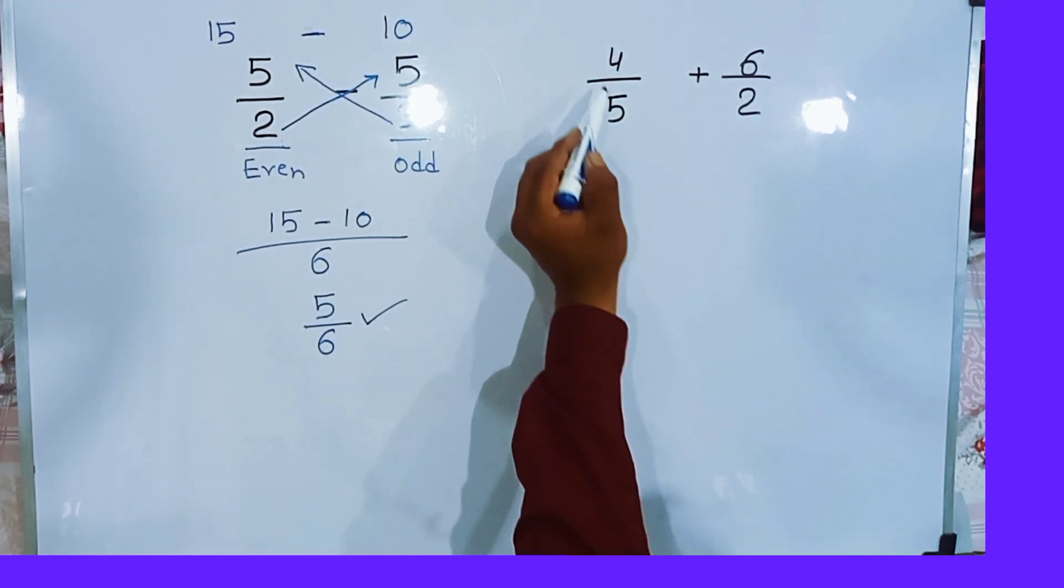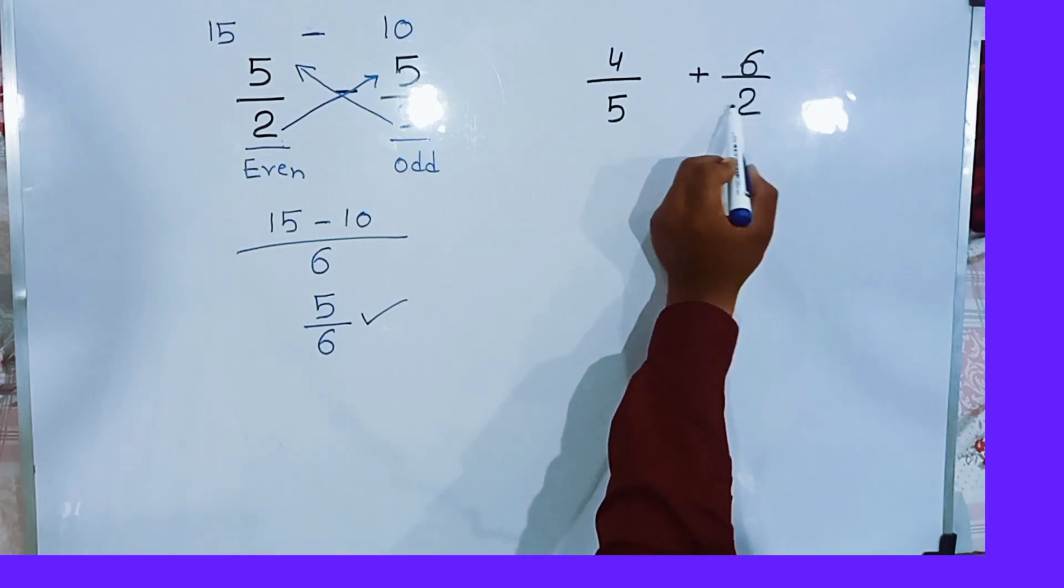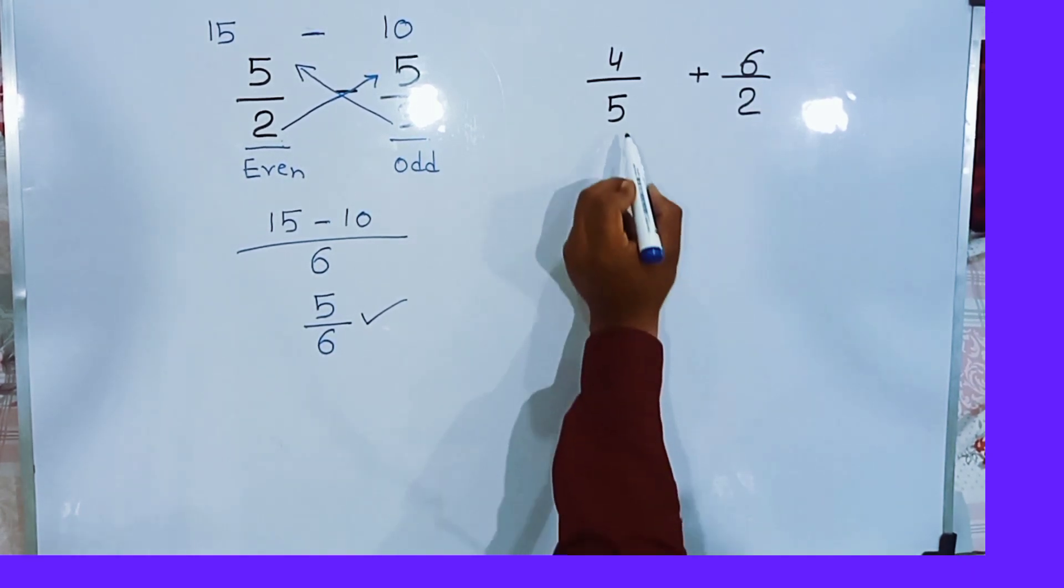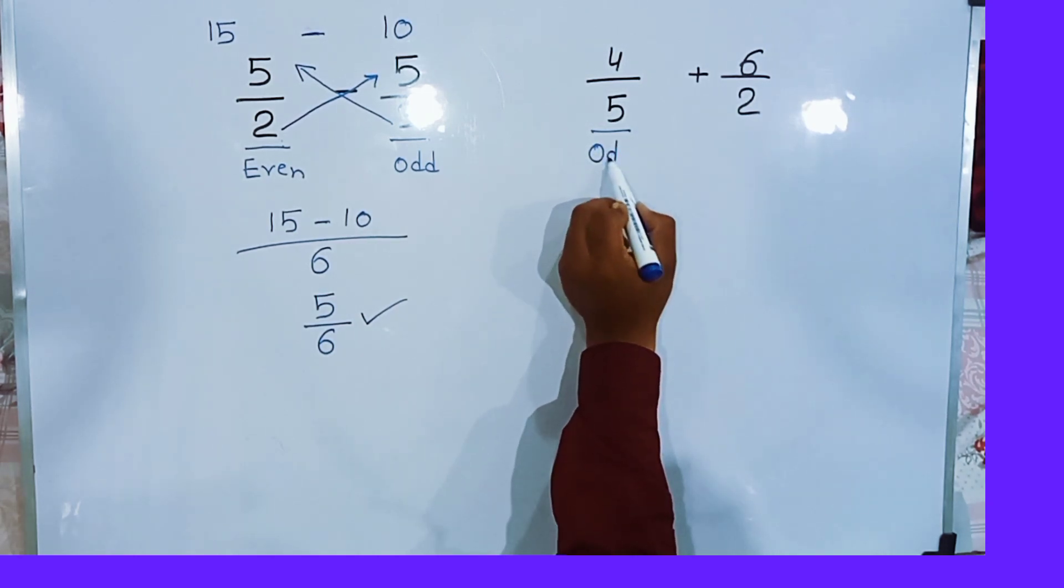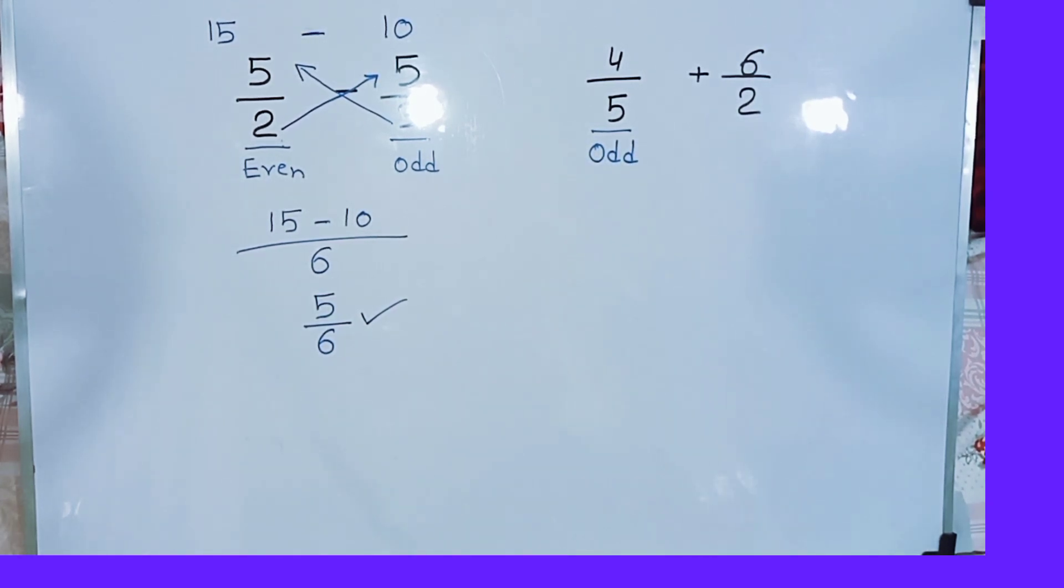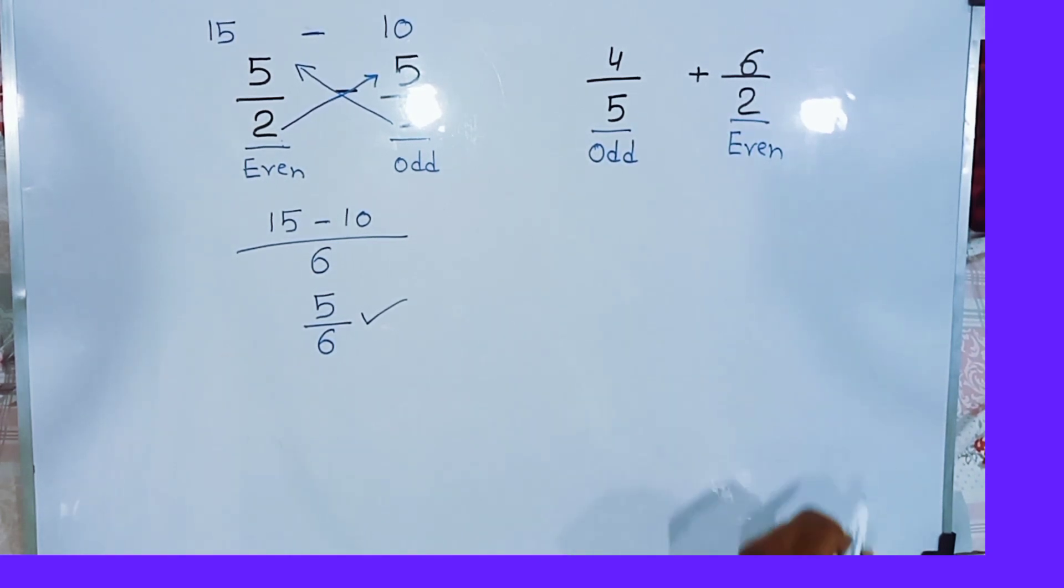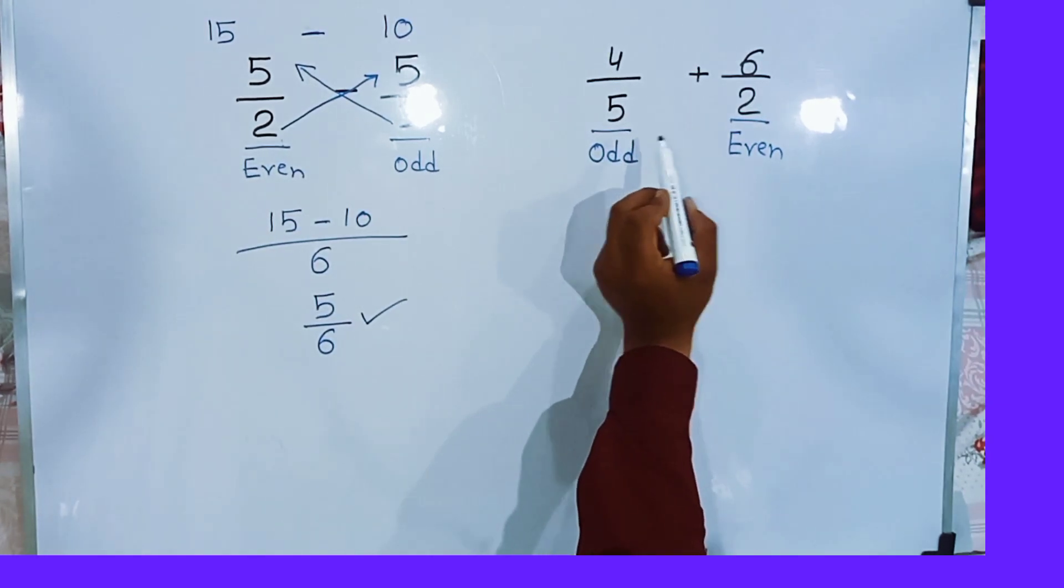Same situation is here. 5 is an odd number while 2 is an even number. Then what will we do? Same procedure repeats here.